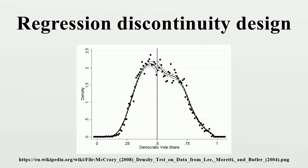In statistics, econometrics, political science, epidemiology, and related disciplines, a regression discontinuity design is a quasi-experimental pre-test post-test design that elicits the causal effects of interventions by assigning a cut-off or threshold above or below which an intervention is assigned.